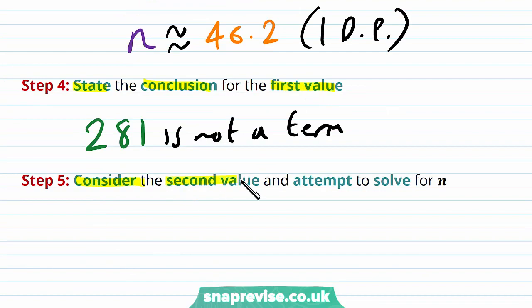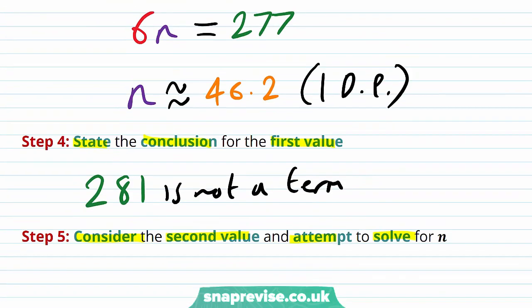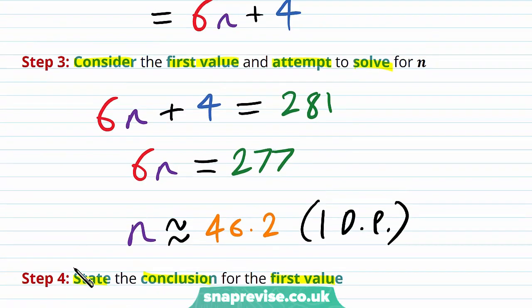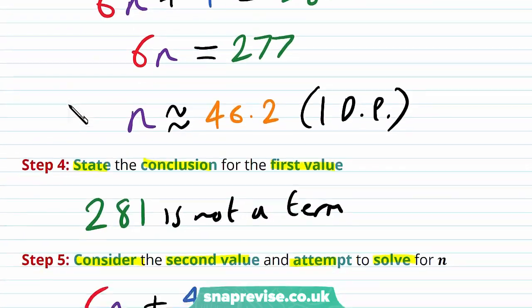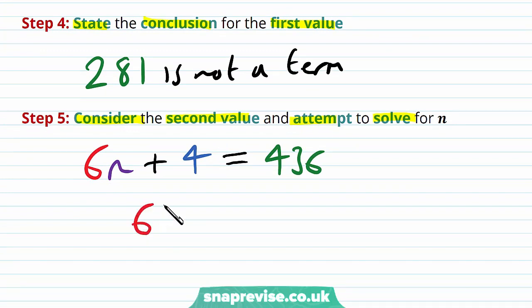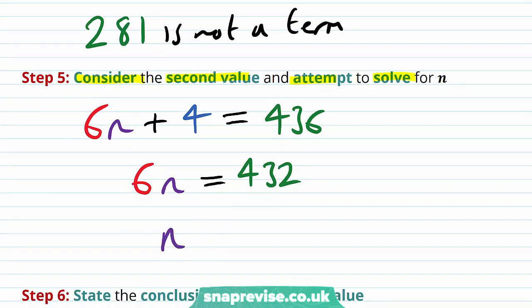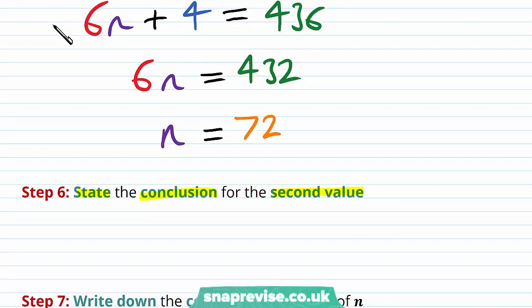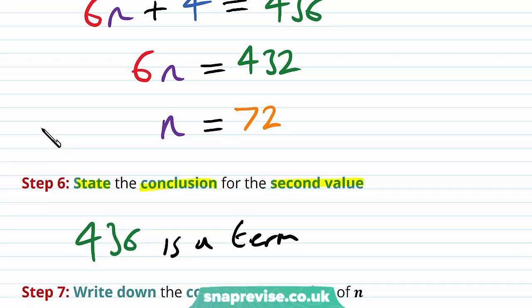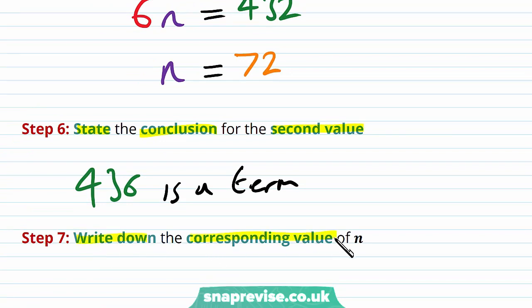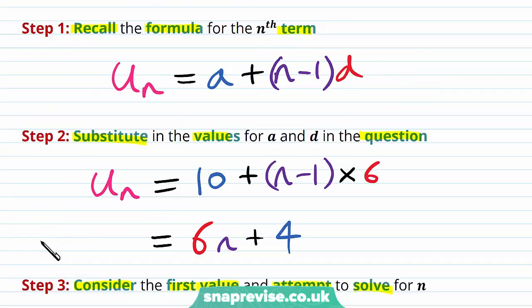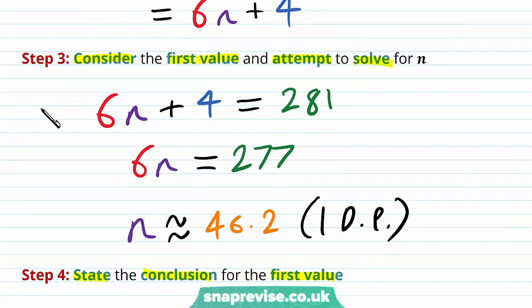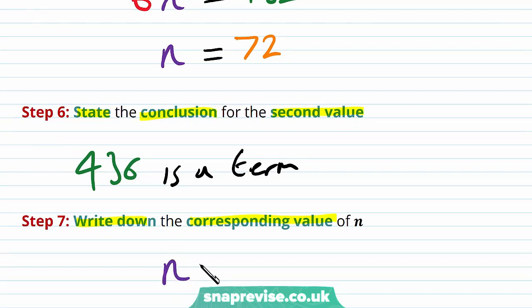Now considering the second value: setting 6n plus 4 equal to 436 gives 6n equals 432. Dividing, we get n is precisely equal to 72. Because 72 is a whole number, 436 is a term in the sequence. We were asked to find which term of the sequence it is, and the answer is n equals 72, so 436 is the 72nd term.